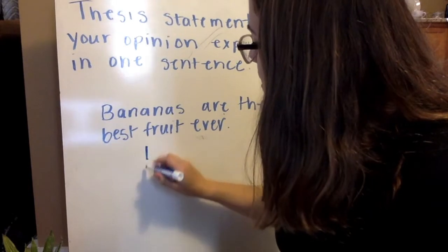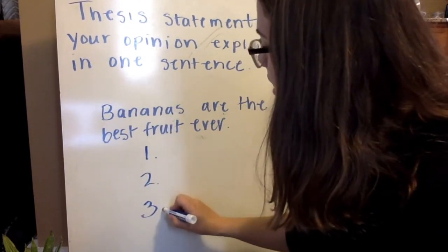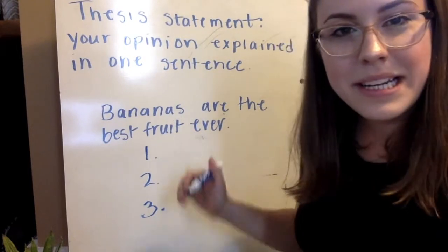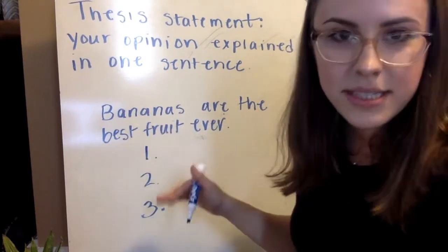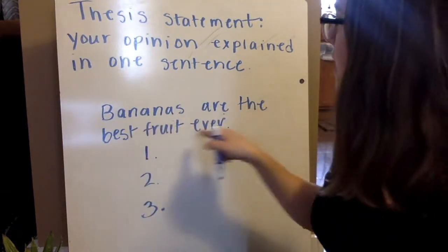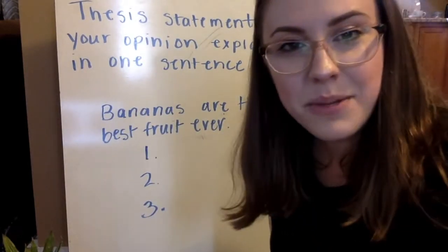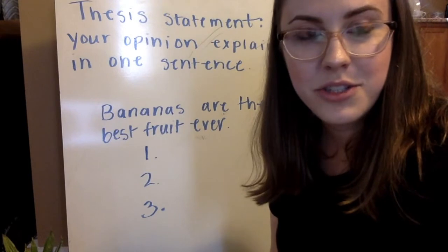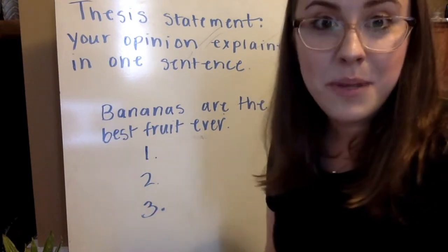So I'm actually going to go like this. One, two, three. Now this is going to help me organize my writing a little bit. This is not a published piece of writing. This is just an outline to help me write in the future. So I have bananas are the best fruit ever. And then one, two, three. I need to come up with now three reasons why I think that's true. And if I really believed in my thesis statement, three reasons should be pretty easy.